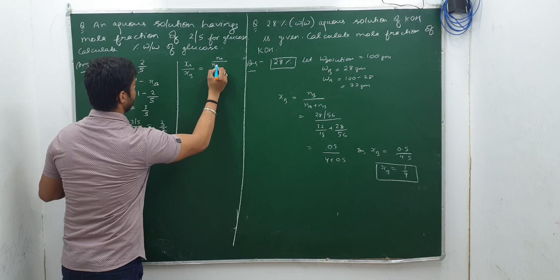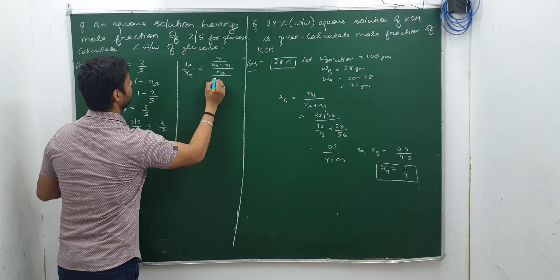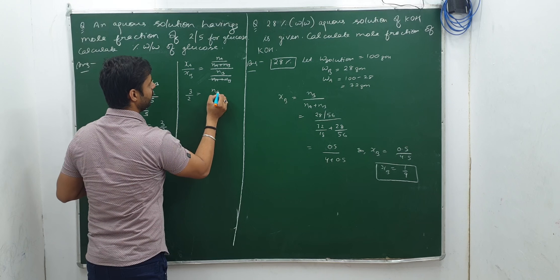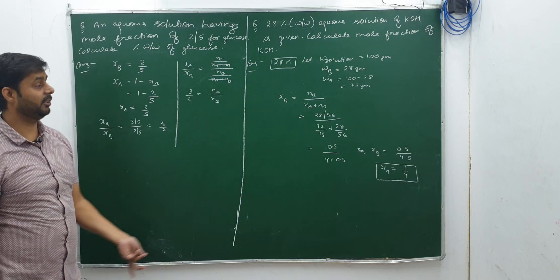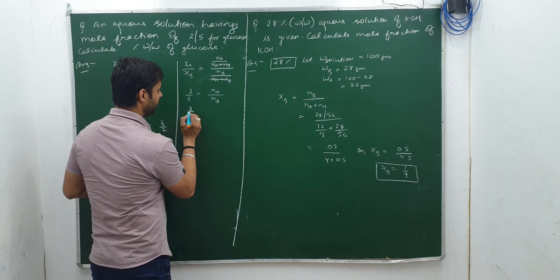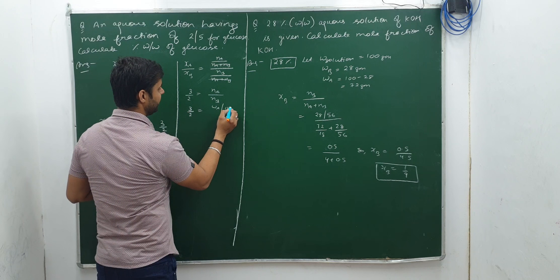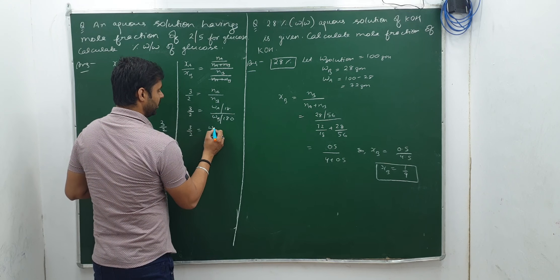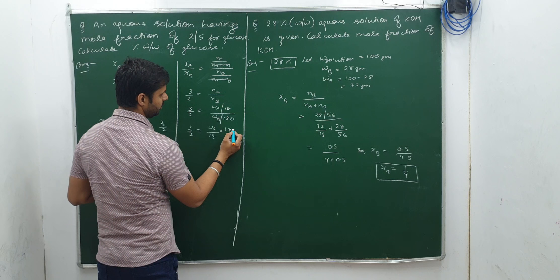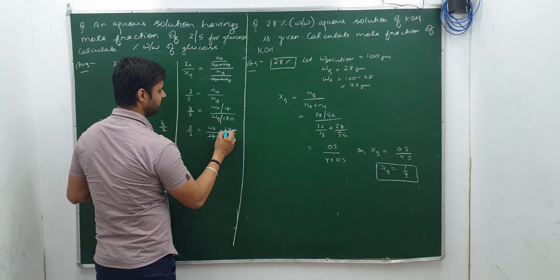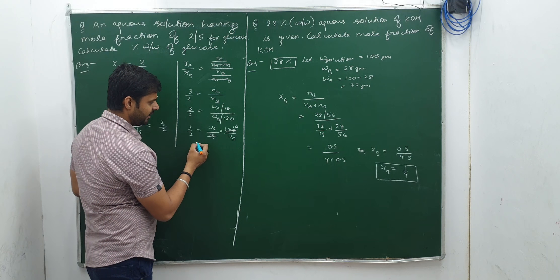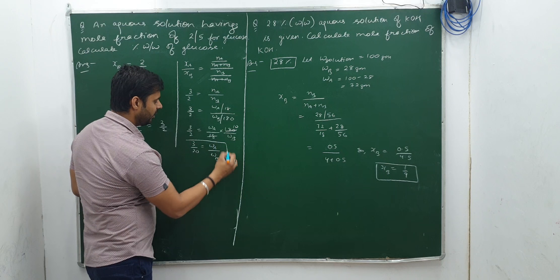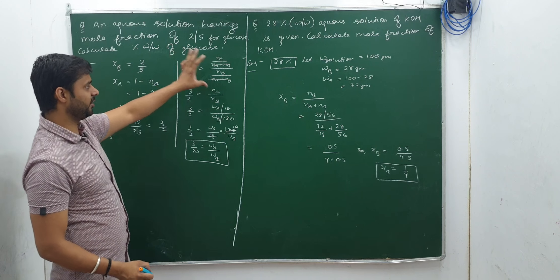So mole fraction ratio equals the ratio of number of moles: N_A / N_B = 3/2. This equals (W_A / M_A) / (W_B / M_B) = (W_A / 18) / (W_B / 180) = 3/2. Simplifying: (W_A × 180) / (W_B × 18) = 3/2, so W_A / W_B × 10 = 3/2, giving W_A / W_B = 3/20.